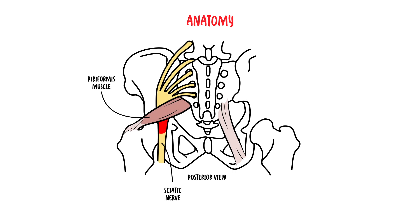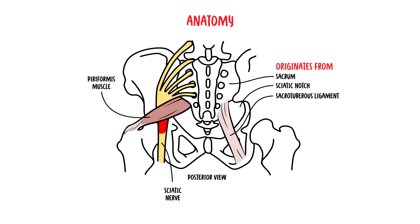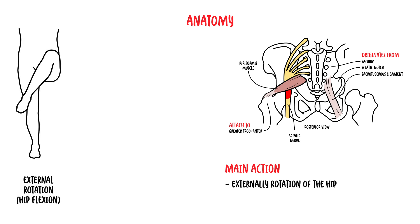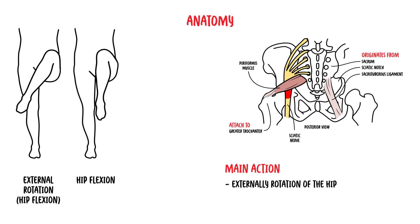Let's revise some of the anatomy. The piriformis muscle is a small muscle which originates from the sacrum, the sciatic notch, and the sacrotuberous ligament, and then runs through the greater sciatic foramen to attach to the greater trochanter of the femur. The main action of the piriformis is to externally rotate the hip. When the hip is in a flexed position, it also acts as a partial hip abductor.